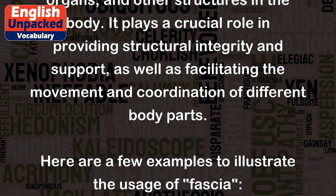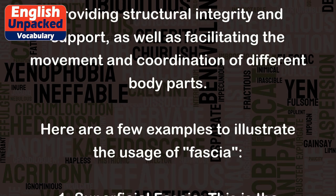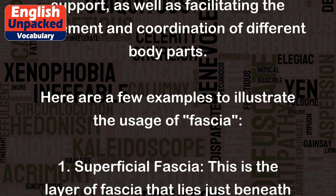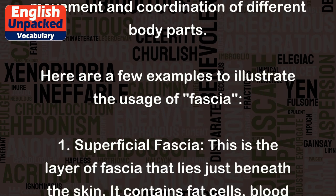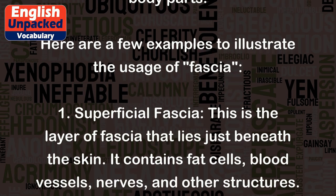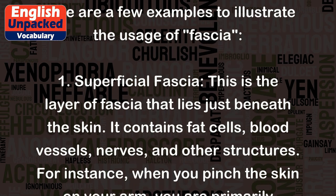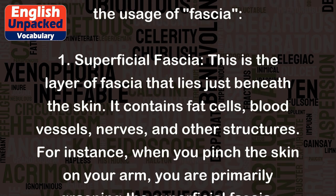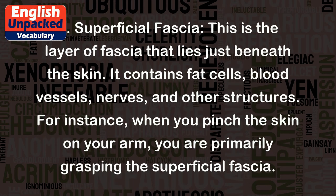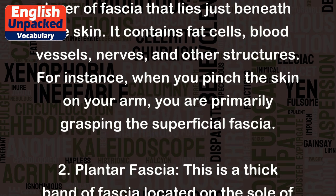Here are a few examples to illustrate the usage of fascia. 1. Superficial fascia: This is the layer of fascia that lies just beneath the skin. It contains fat cells, blood vessels, nerves, and other structures. For instance, when you pinch the skin on your arm, you are primarily grasping the superficial fascia.